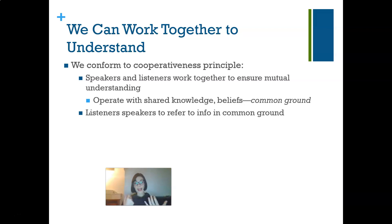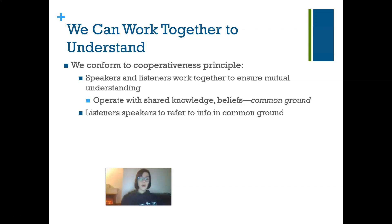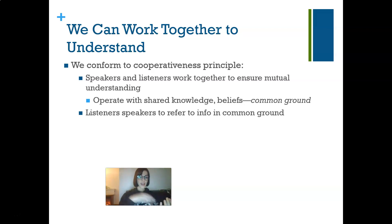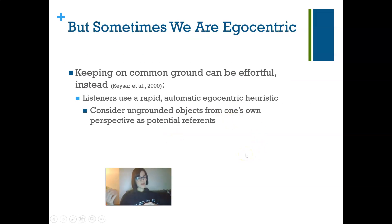When we are in conversation with other people, we tend to conform to what is called the cooperativeness principle — we work together to ensure mutual understanding. We operate with shared knowledge and beliefs, called common ground. I don't assume you know what I know; I work to situate you before introducing things you may not understand. If I assume you know what I know but you don't — for instance, making inside jokes you don't get — that is an egocentric bias. Generally, listeners and speakers try to refer to information in that common ground, but some of us are more egocentric than others.